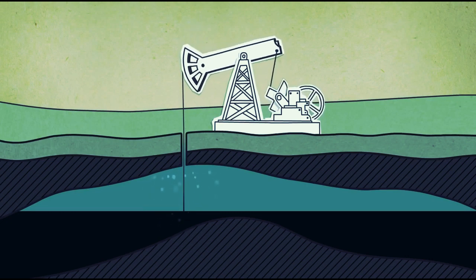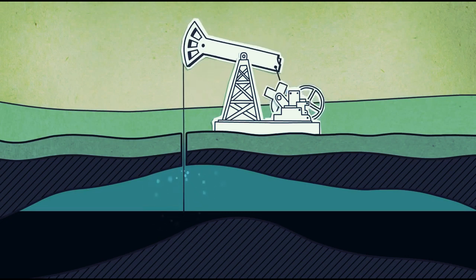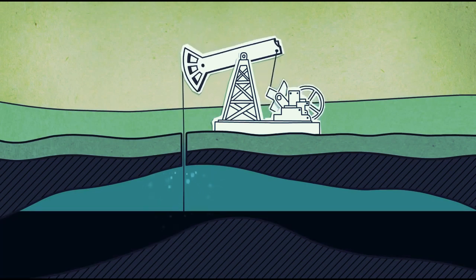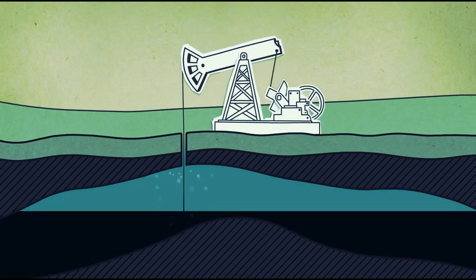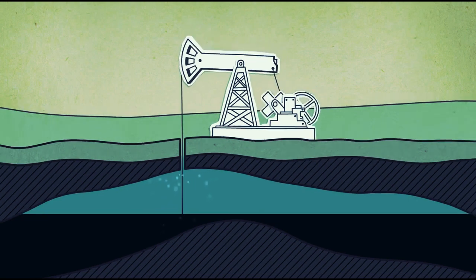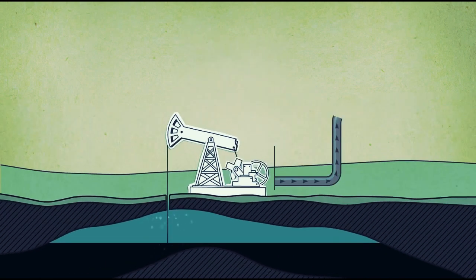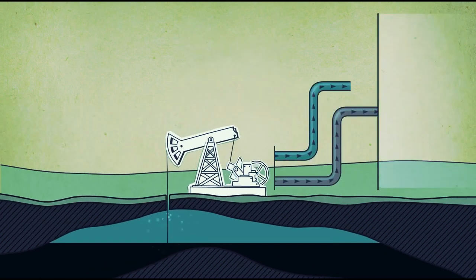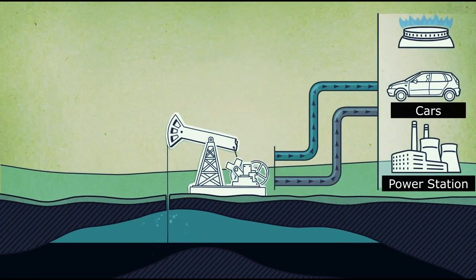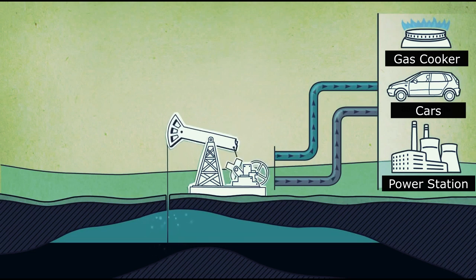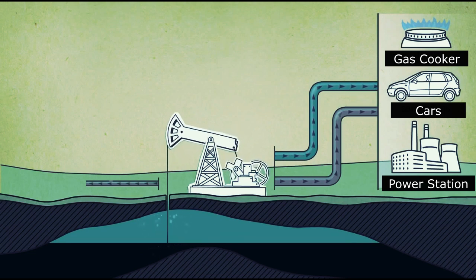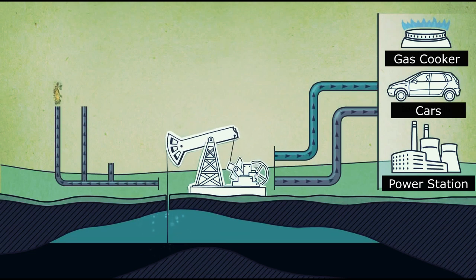Oil contains associated gas and other heavy hydrocarbon compounds, which are further processed to produce gasoline, diesel, and other fuels. The associated gas is also processed and its products are used in cars, power stations, and gas stoves.